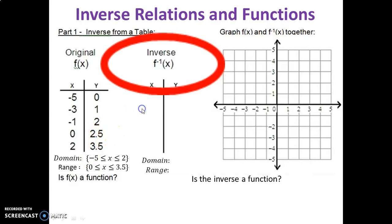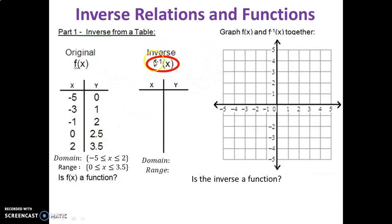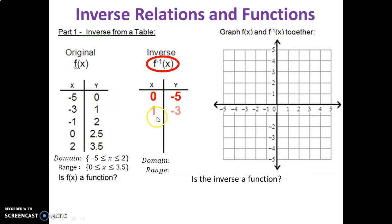So let's find the inverse. Inverse is written with a negative 1 exponent — whenever you see that notation, it means we're looking for the inverse. All that an inverse is: we take a function and all x-values become y-values and all y-values become x-values. For example, the point negative 5, 0 becomes 0, negative 5 on the inverse. Try that for the next point — we get 1, negative 3. Continue on for the rest of the points.